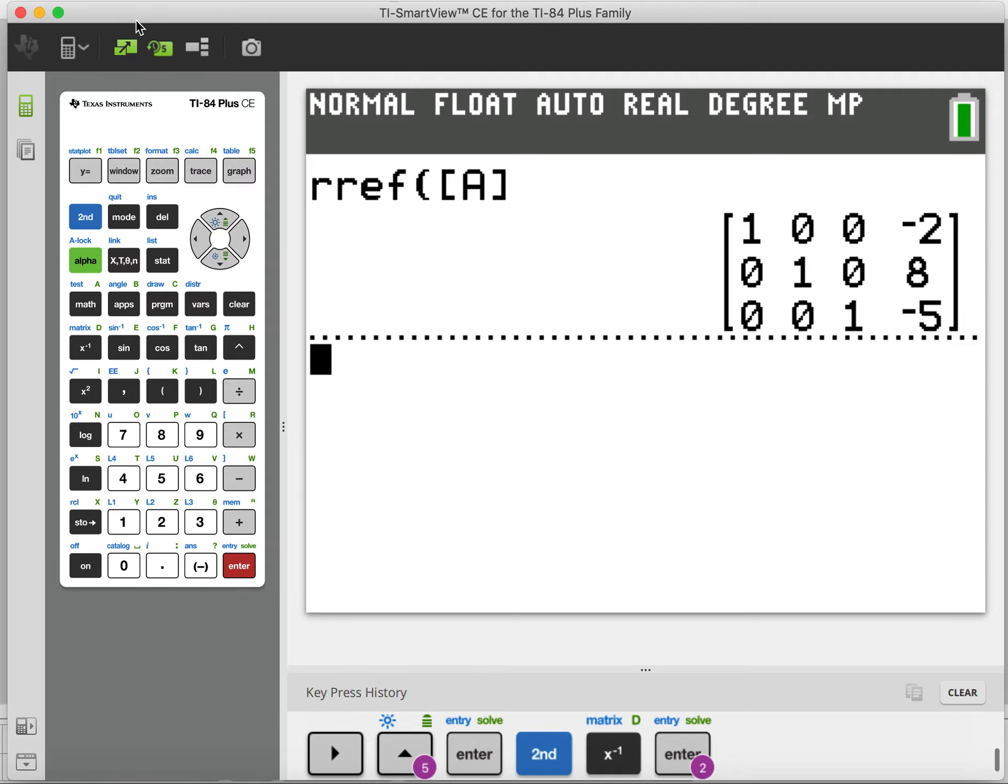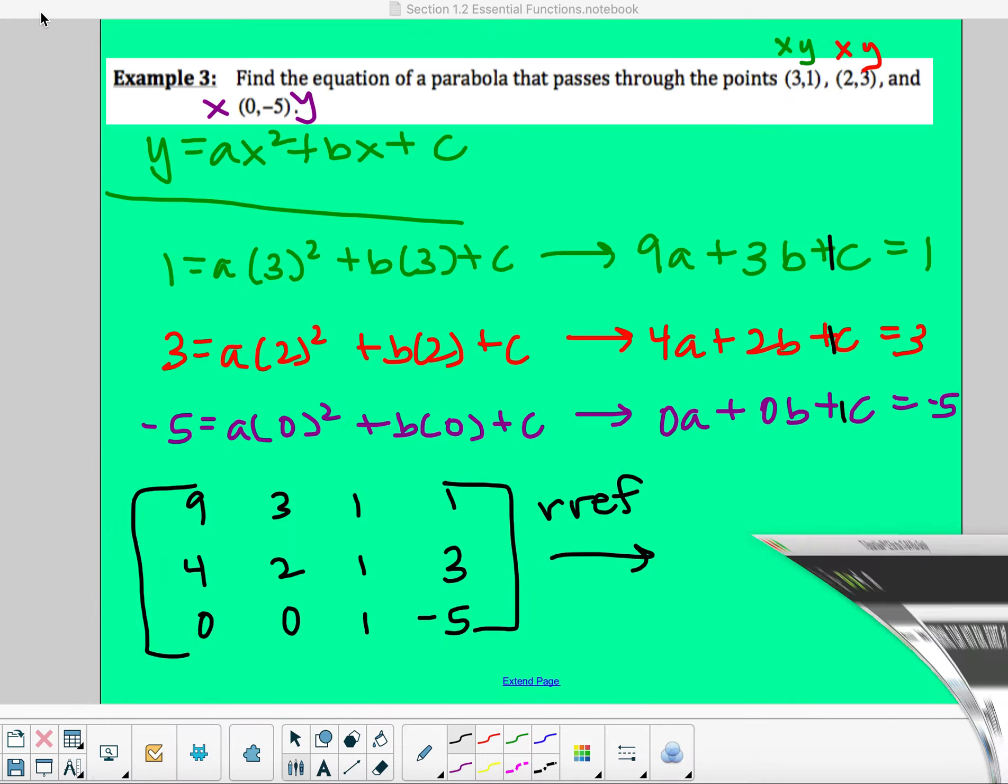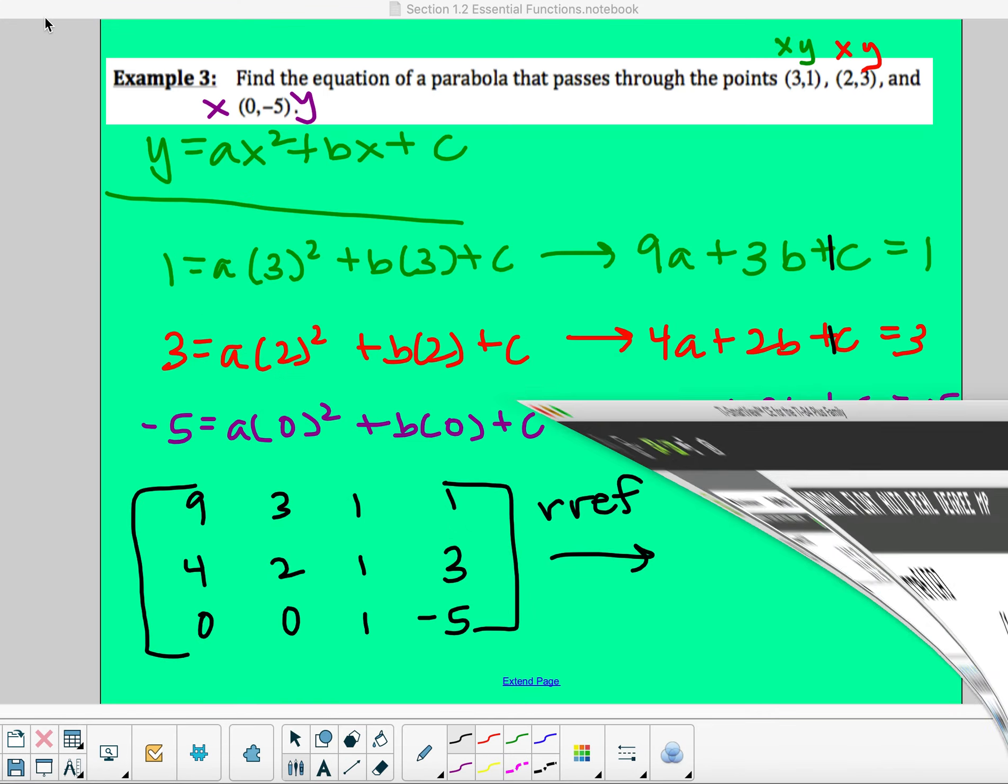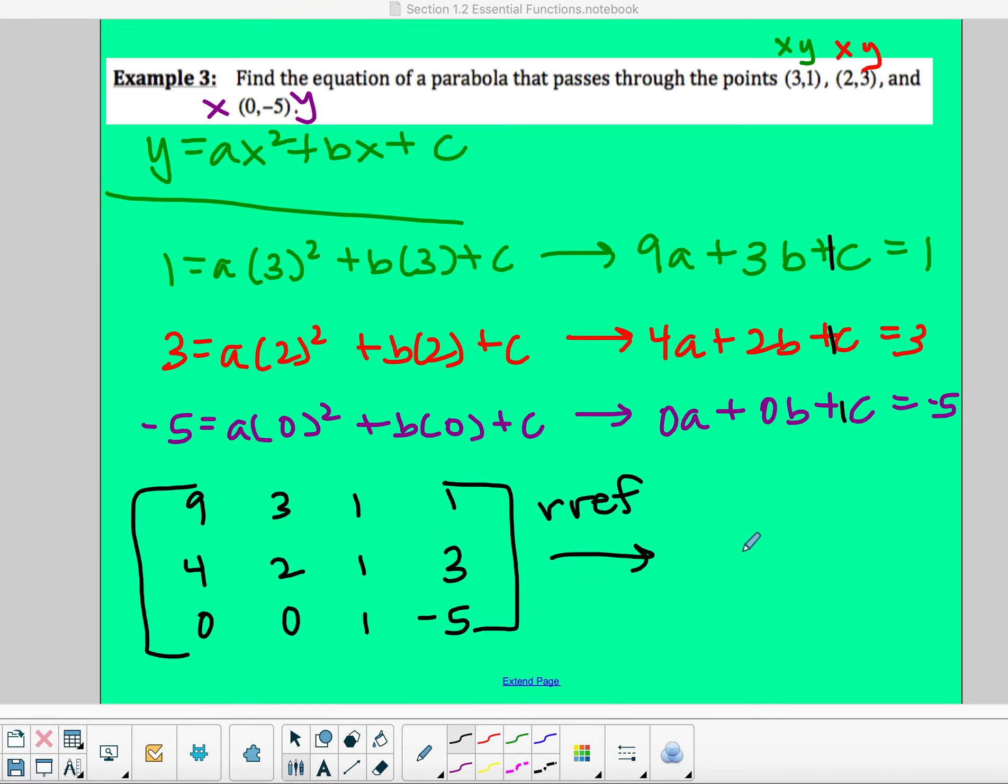So we're going to write this down, and then we'll talk about what each one means. So my reduced row echelon form led us to one, zero, zero, just writing down the identity part first. And then what was it? Negative two,